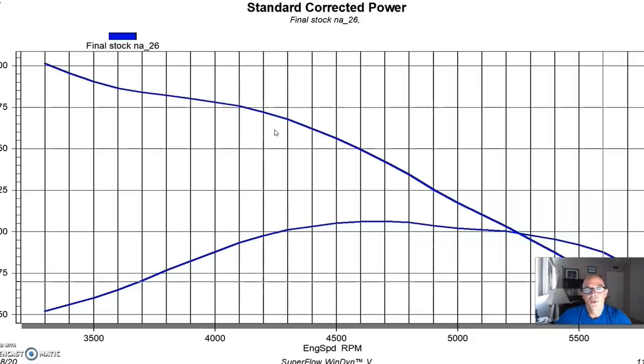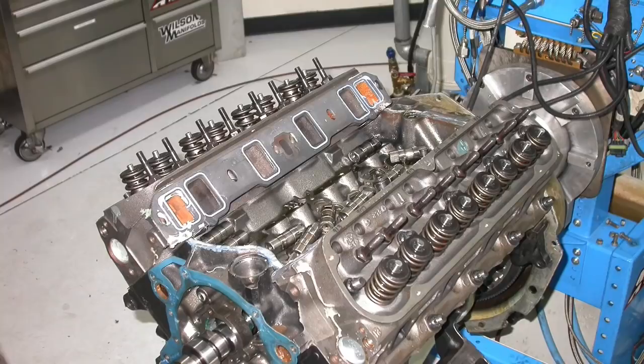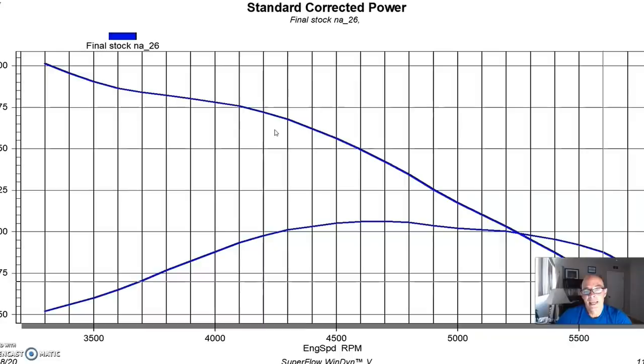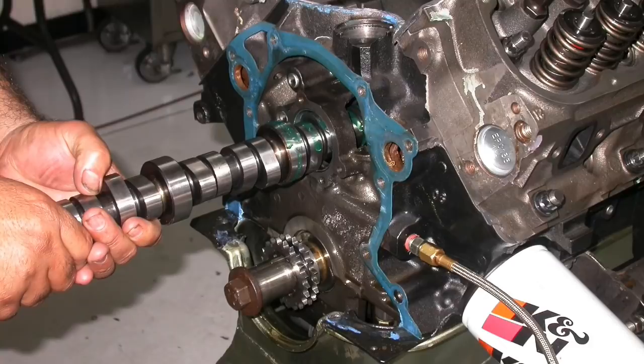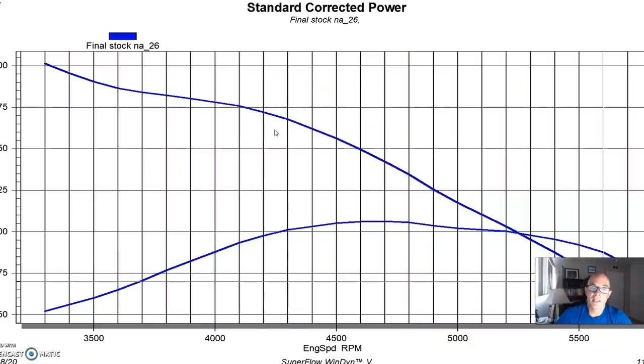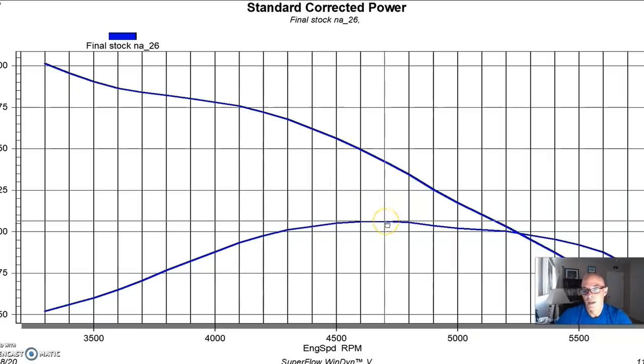We also topped the 347 with a set of stock E7TE heads and a stock 5L stick camshaft, so mild cam, stock heads, GT-40 intake. It's as close as we could get to being stock. I mean after all it was already a 347, but as we'll see from the power output, the stock heads and stock cam really limited power production, even though this was a 347.